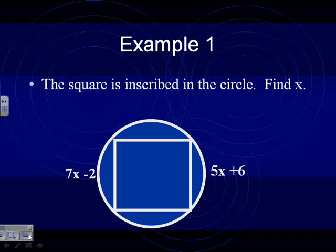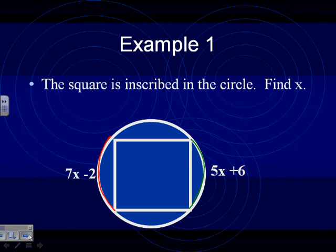Got a vocab term from last time. The square is inscribed in the circle. Remember what that word means. It's inside of it. What else? It touches the outside of the circle. Very good. Every vertice of that polygon is on the circle. So it's inside of it, and all of its vertices are on. That's what you can see in this square. We want to find x. And what we're given, the 7x minus 2 would be this arc right here. And the 5x plus 6 is going to be this arc over here.